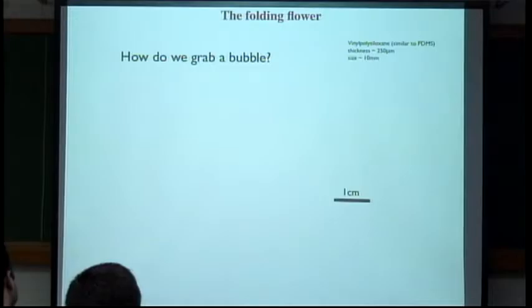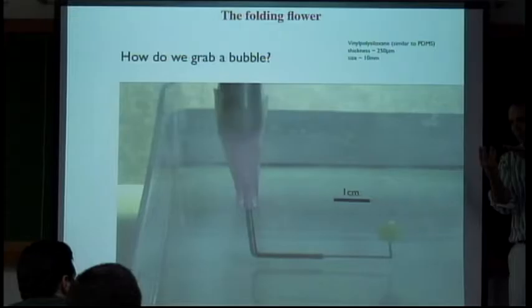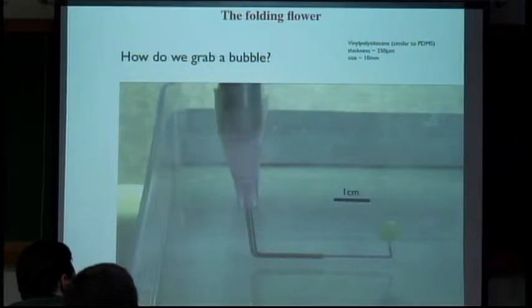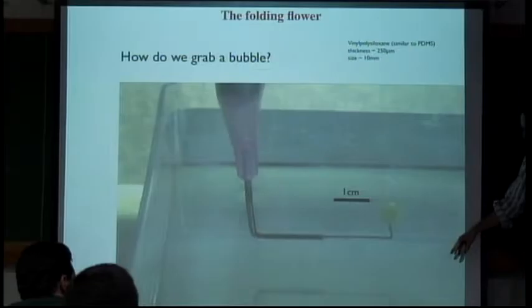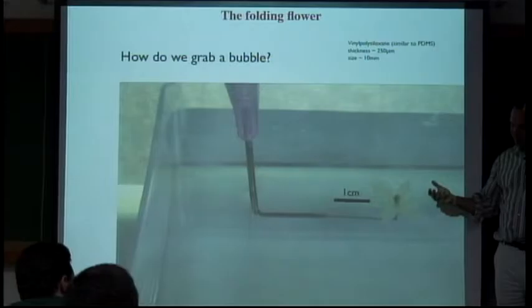How does the folding flower work? There are flowers that live in ponds, and when there are floods, the water level comes up. They want to protect their genetic material, so they close in response to the rising water. When the flood recedes, they open up again, having survived the ordeal. It's again relying on the flexibility of the solid and interfacial forces for survival.